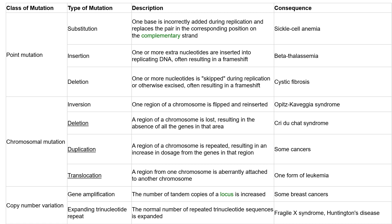An insertion mutation, which can result in beta-thalassemia, is where one or more extra nucleotides are added into the replicating DNA. For example, if the sequence is ATG and you insert an A it becomes AATG, which is then coded differently — that is an insertion mutation. Contrastingly, a deletion mutation, which can result in cystic fibrosis, is where one or more nucleotides are skipped during replication, resulting in a frameshift mutation. Both deletion and insertion are frameshift point mutations.